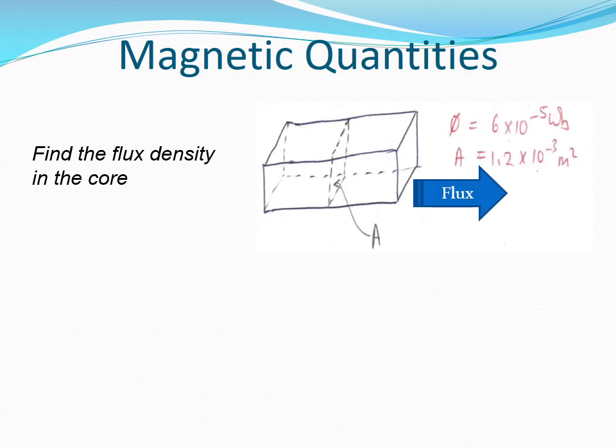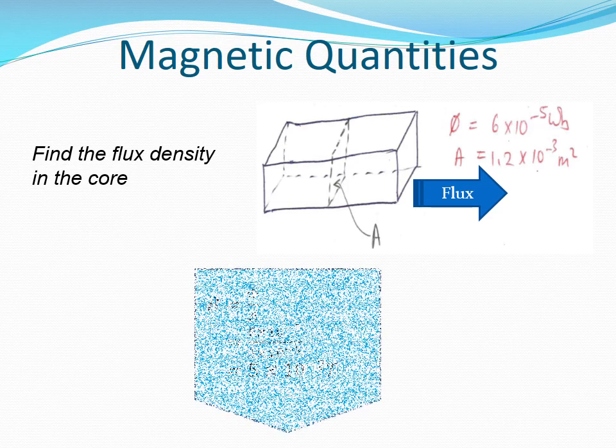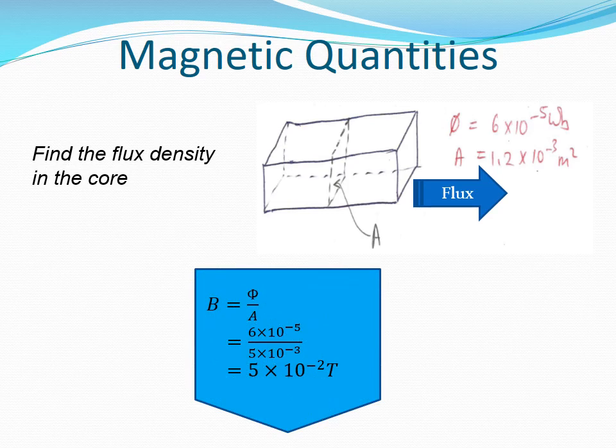We have an example here. We are given the flux through a core and the cross-sectional area of the core, and we want to determine the flux density. We apply the formula for flux density: B equals phi over A, and substitute using the given values. We get our flux density as 5 times 10 to the power minus 2 teslas.